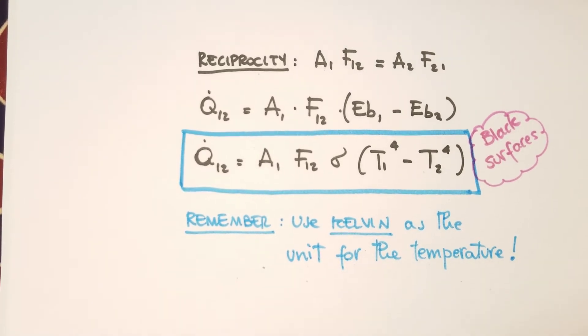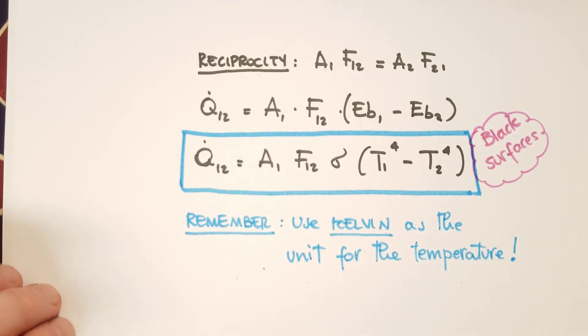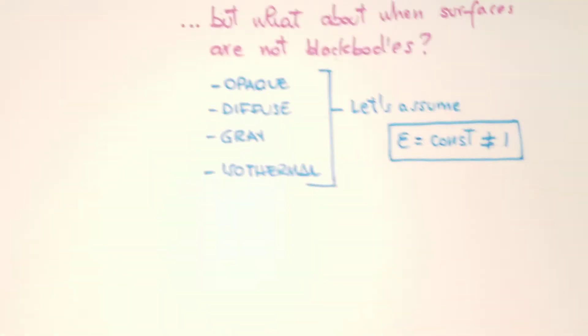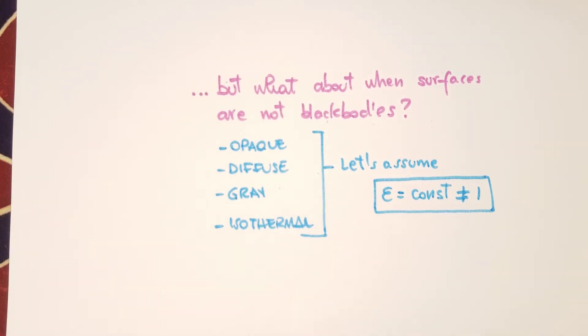Now we can ask ourselves, what happens instead if we don't have black bodies as surfaces, but we have surfaces that are actually real surfaces, for example, opaque, diffuse, and gray in general. So in this case, the emissivity ε is different from 1, so it's a constant number, so the physics is different. We discussed this previously.